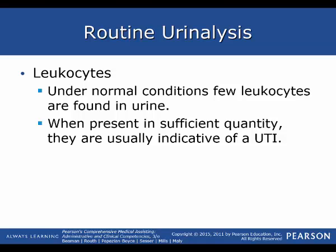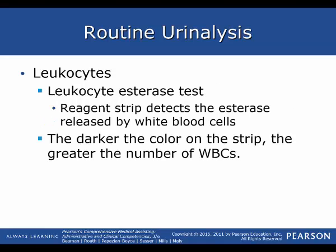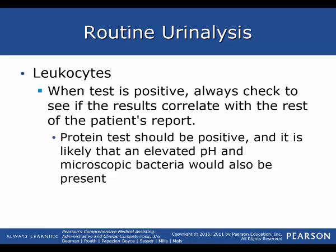Leukocytes are your white blood cells. Under normal conditions, a few leukocytes are found in urine, but when present in sufficient quantity they are usually indicative of a UTI. The leukocyte esterase test uses a reagent strip to detect esterase released by white blood cells — esterase, or anything ending in -ase, is usually an enzyme. The darker the color on the strip, the greater the number of white blood cells. When the test is positive, protein tests should also be positive, and an elevated pH along with microscopic bacteria would likely be present. If those findings do not correlate, you should go back and retest the urine.